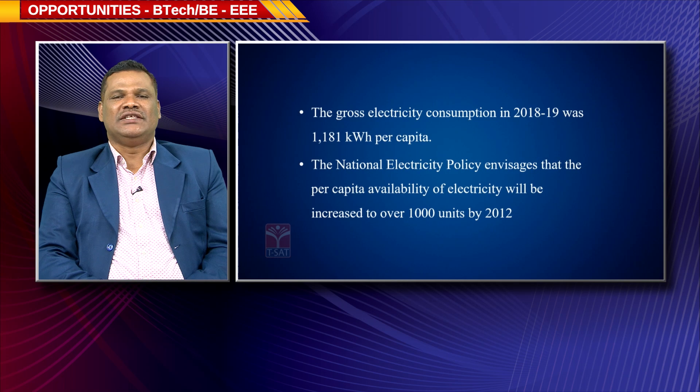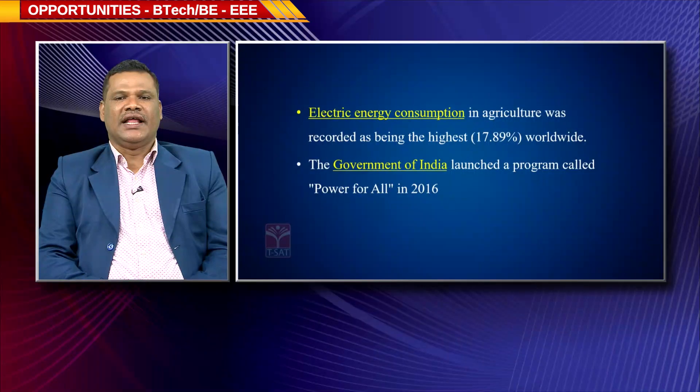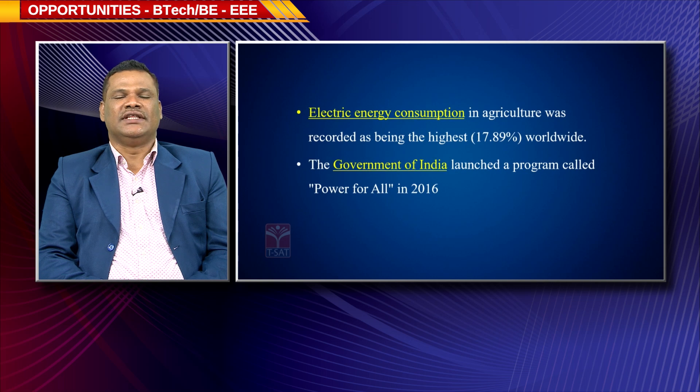Without a fan we cannot survive. Without AC we cannot survive. Without electricity pump supply we cannot survive. Water generation, electricity generation — anything is possible only with electricity. Electric energy consumption in agriculture was 17.89 percent worldwide. The Government of India launched the program called 'Power for All' in 2006, so that each individual in each remote place gets power supply. That is the aim of our government and agencies, supplying free power to all farmers and small-scale industries.